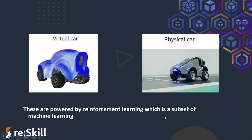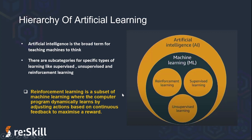But what is reinforcement learning? Artificial intelligence is a broad term for teaching machines to think. There are subcategories for specific types: supervised, unsupervised, and reinforcement learning. Reinforcement learning is like training a dog — if your dog does something good, you give it a reward; if it does something bad, you won't reward it. And over time, it will learn based on the outcomes of its actions which actions are actually good actions.